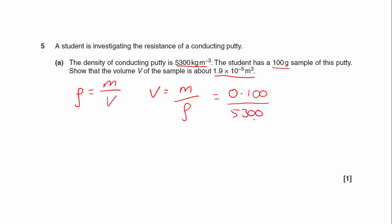And that comes out as being, into my calculator, as 1.89 times 10 to the minus 5 meters cubed, which is about 1.9.